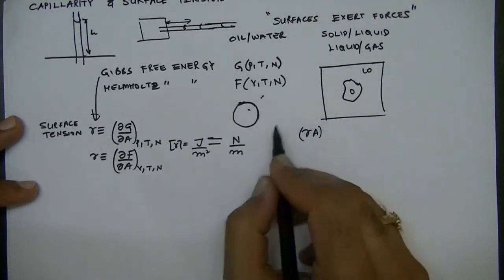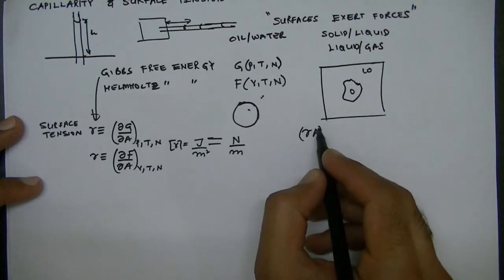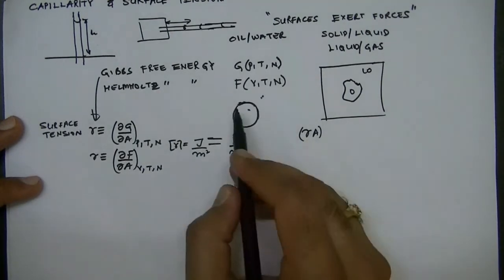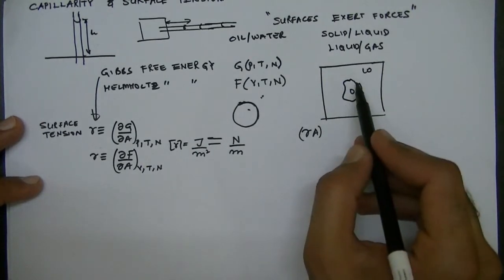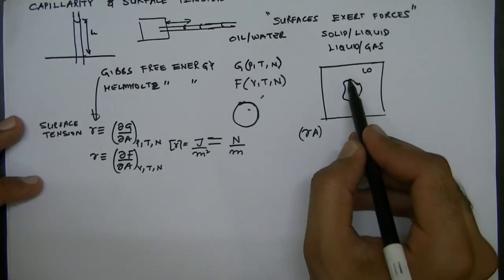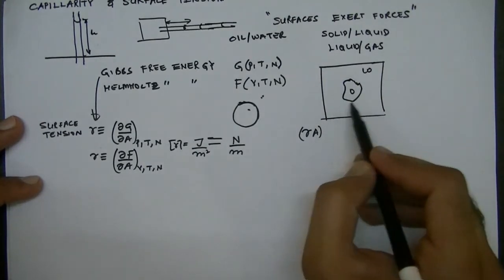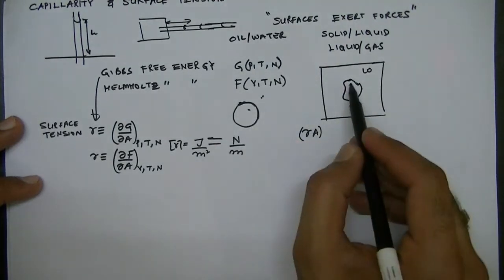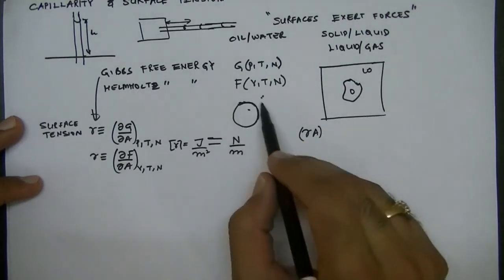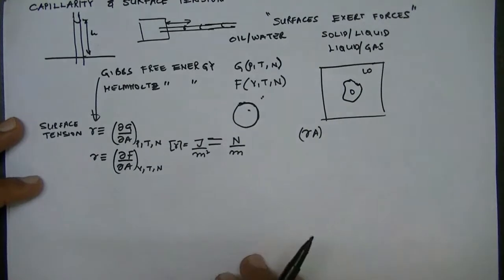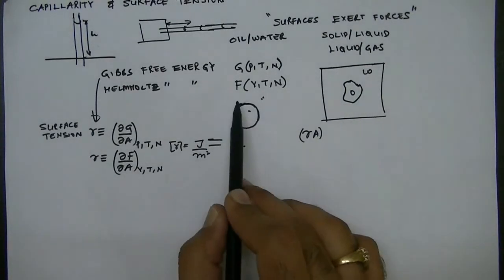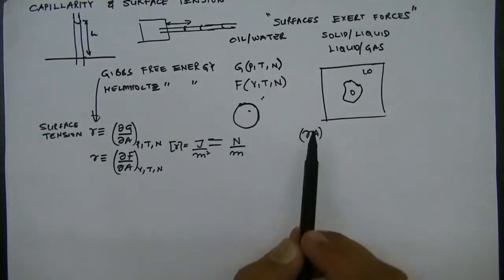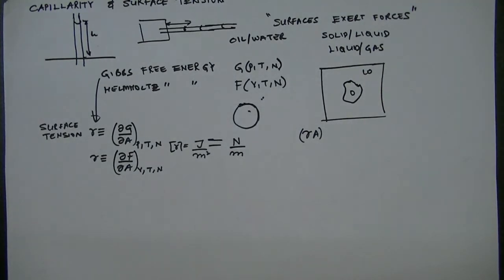Since gamma is a constant for a given pair of materials at fixed pressure and temperature, the total surface energy is gamma times A. If the system wants to minimize surface energy, it should minimize the surface area. For a given volume of an oil drop, the minimum surface area corresponds to a sphere, which is why the oil drop acquires a spherical shape.